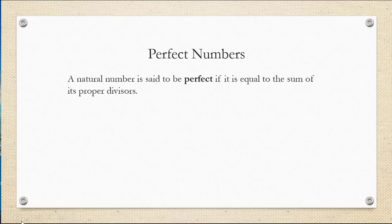So for example, 6 is considered perfect because the proper divisors of the number 6, the numbers that divide evenly into 6, are 1, 2, and 3. We're not including 6 itself. 1 plus 2 plus 3 is also equal to 6.